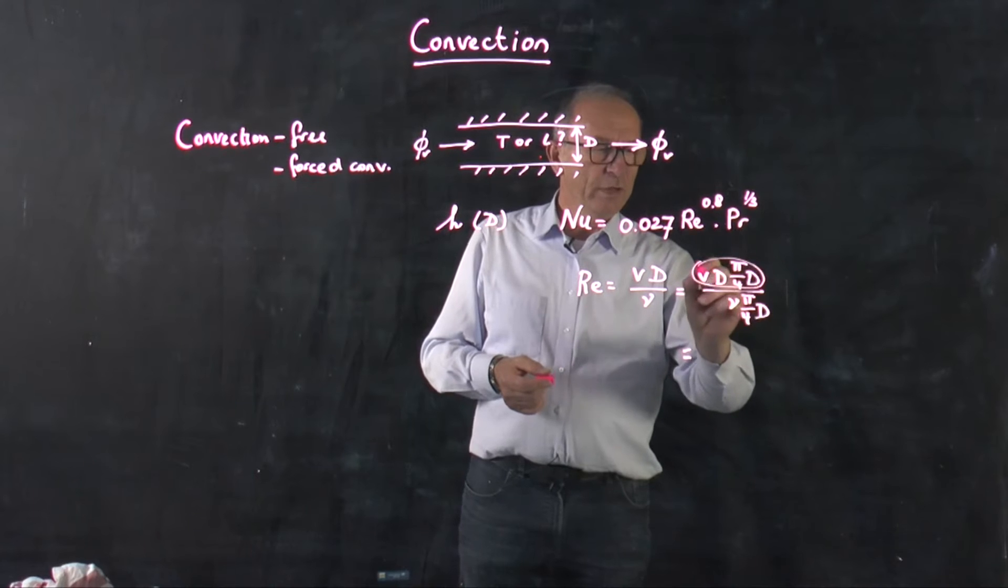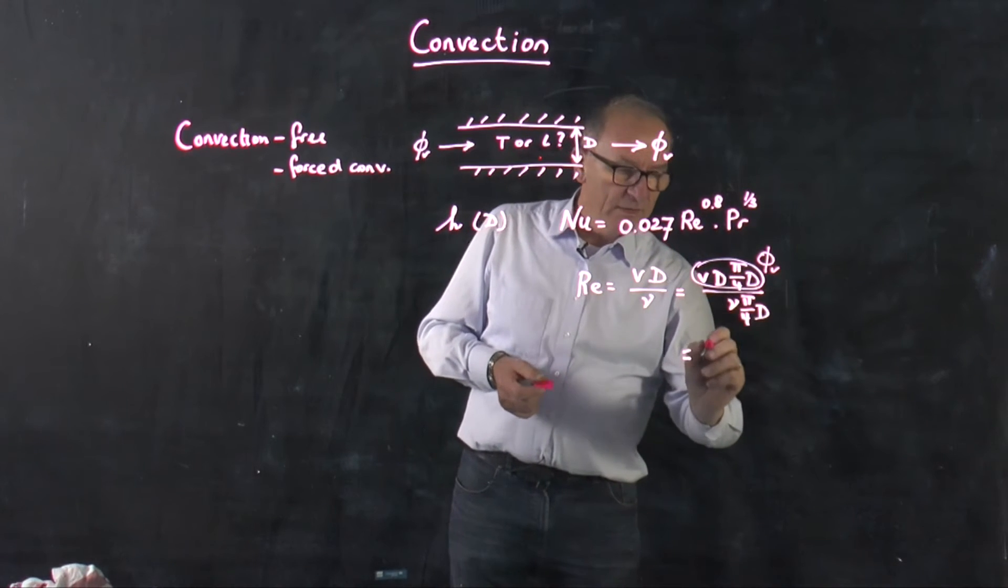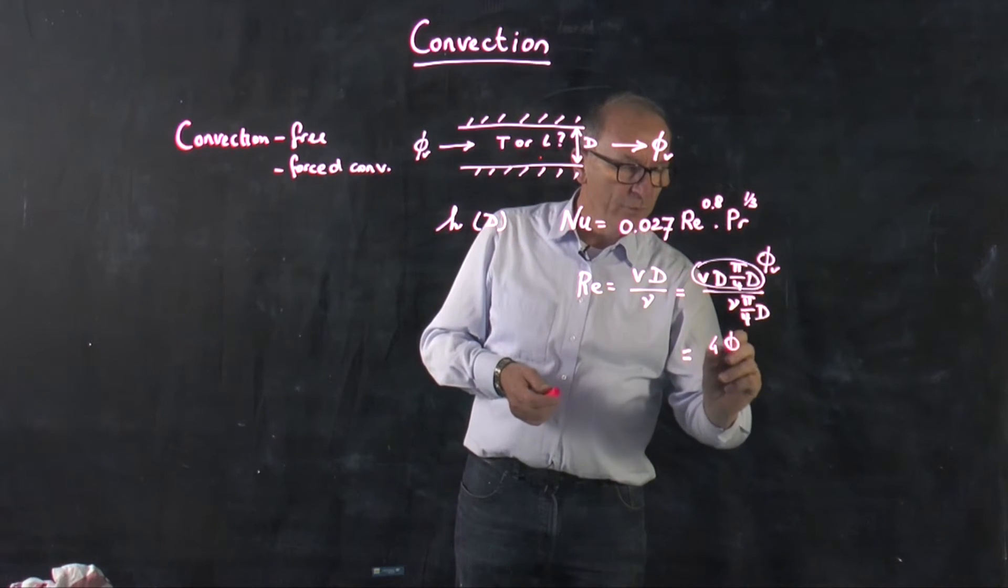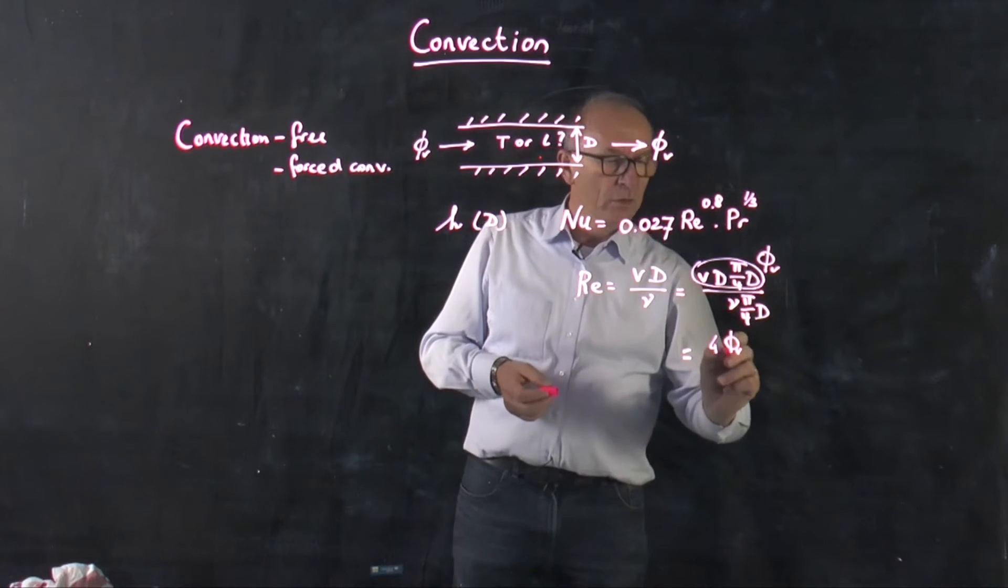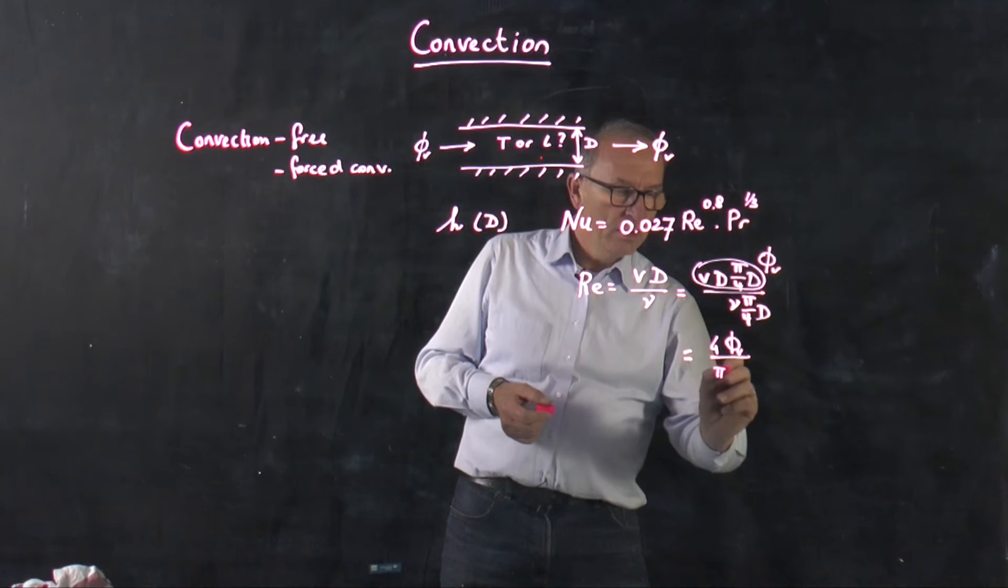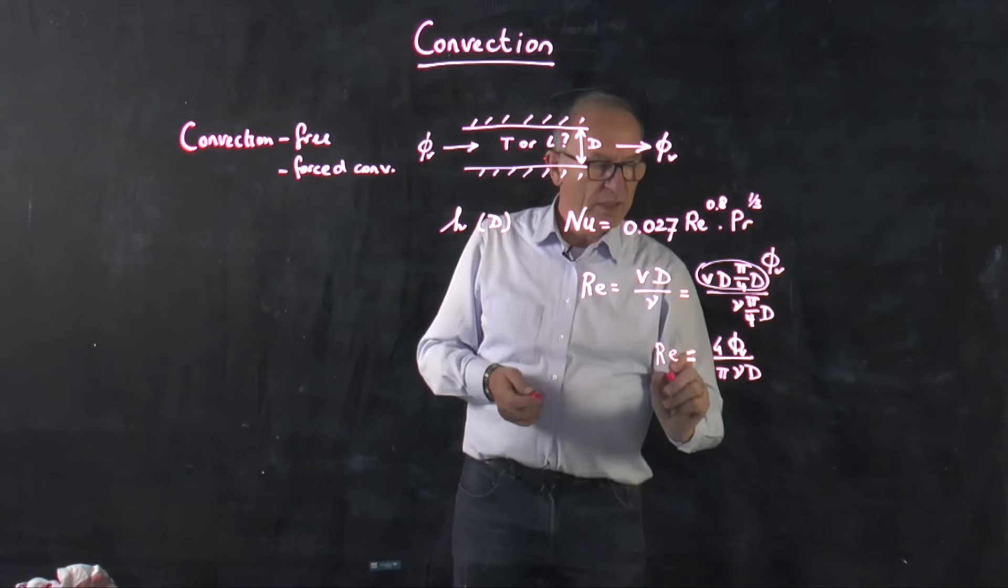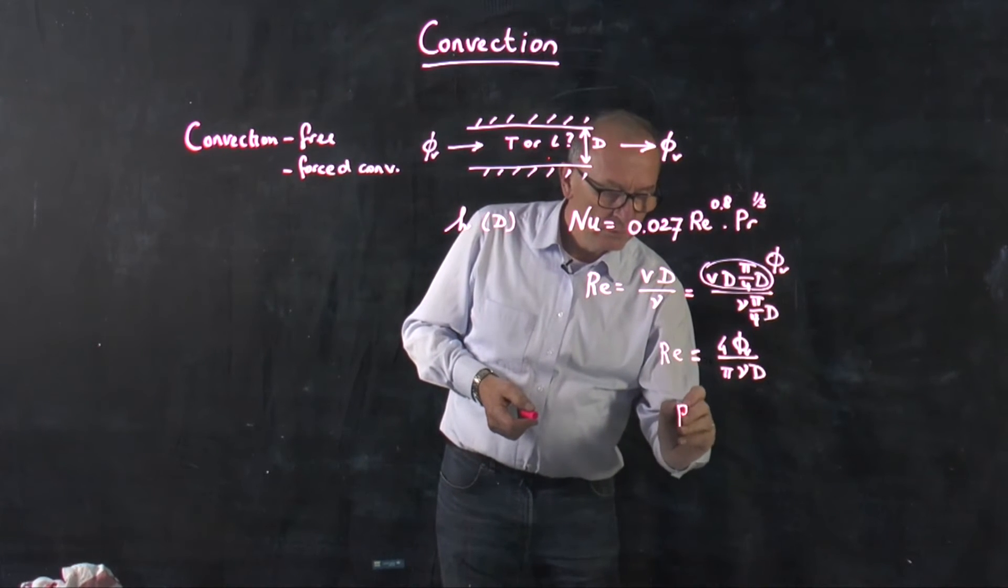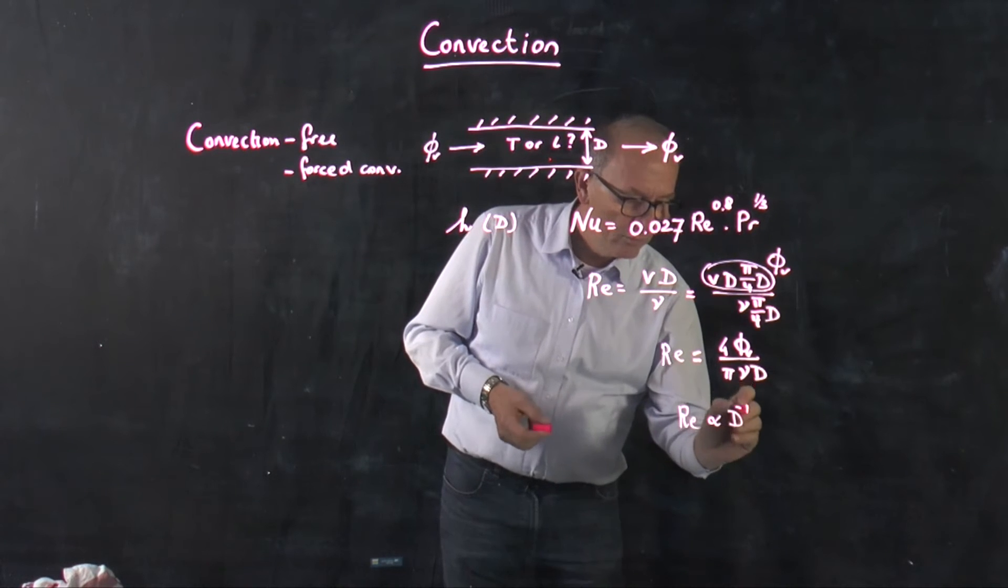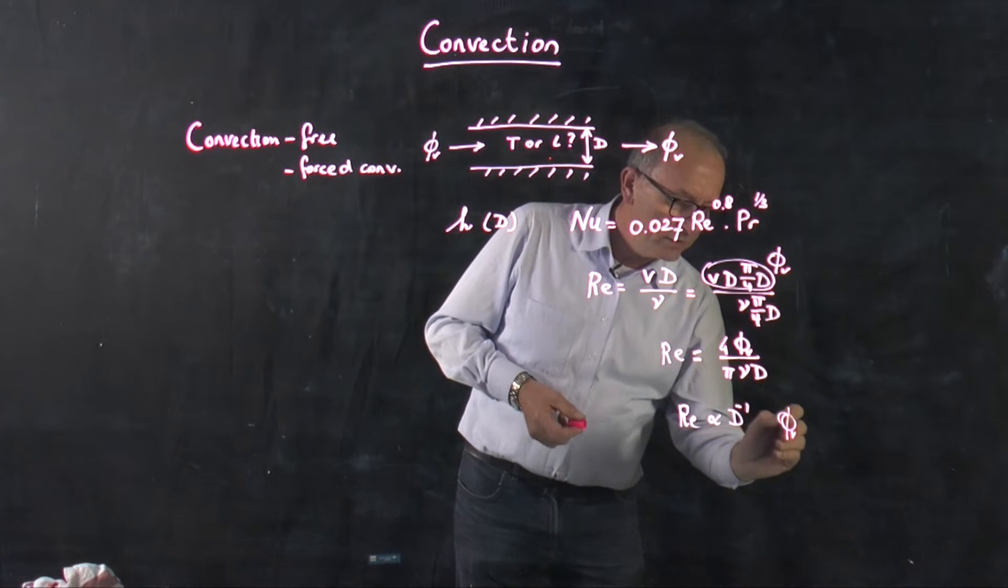This is the volume flow rate, this is divided by four pi is here, multiplied by four divided by pi, divided by kinematic viscosity, and the diameter. So we see that Reynolds is proportional to D to the minus 1, if volume flow rate is constant.